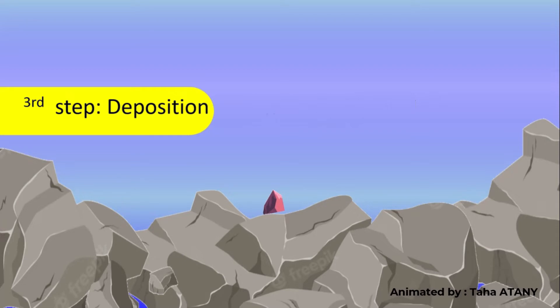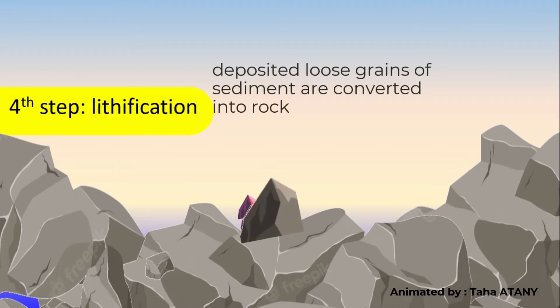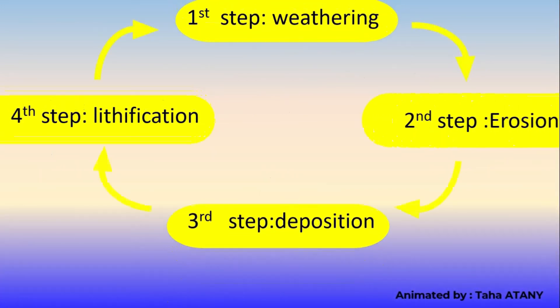Sediment—several of the same elements get deposited in the same environment so they can gather and be compacted to make the fourth step: lithification. The deposited loose grains of sediment are converted into rock, so we have a new rock through these four step processes.